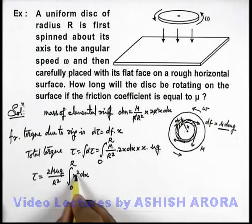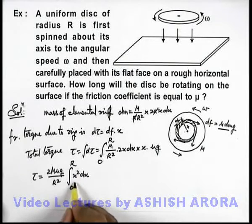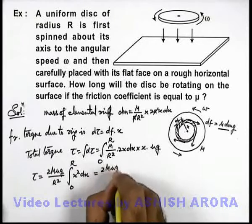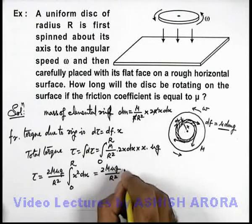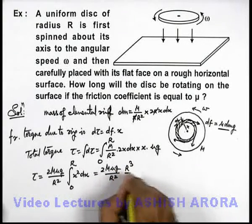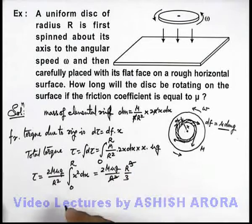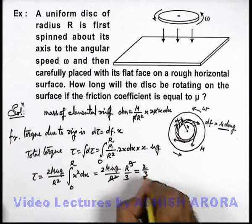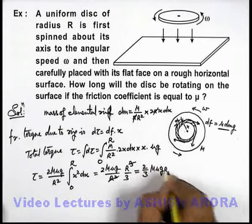If I integrate this expression, the integration of x² will be x³/3. If I substitute the value of R, it'll be 2m μg by R² into R³/3. R² gets cancelled out, so the torque I'm getting is 2/3 m μg R.